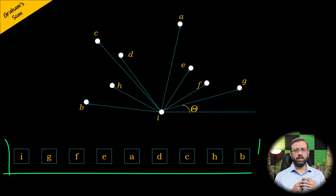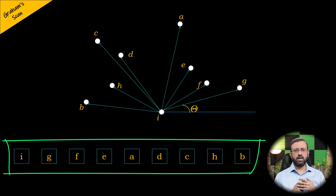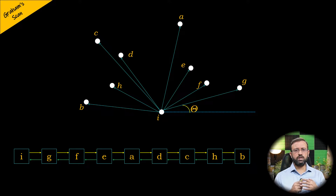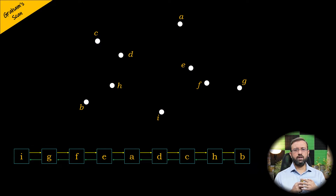We have nine nodes in sequence created for all nine points, sorted based on the angle between point I and all the other points. These nodes are the nodes of the doubly linked list. We use the doubly linked list in Graham Scan because it is very easy to traverse. We will be scanning the nodes of the doubly linked list to compute the convex hull.